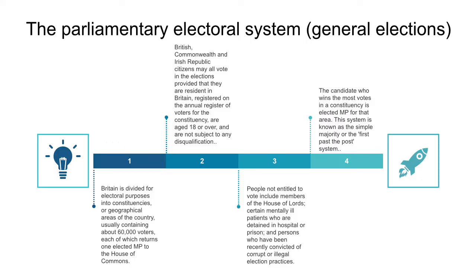Britain is divided for electoral purposes into constituencies, or geographical areas of the country, usually containing about 60,000 voters, each of which returns one elected MP to the House of Commons. The constituencies are supposed to be frequently changed in size and location in order to ensure fair representation and to reflect population movements.